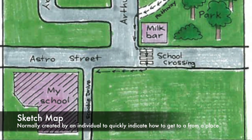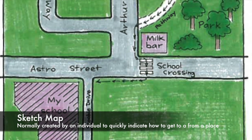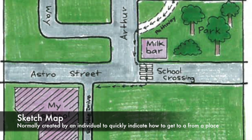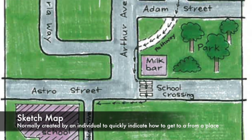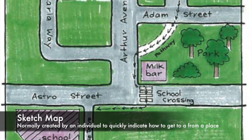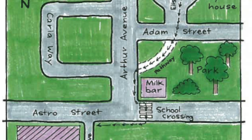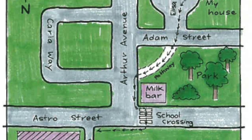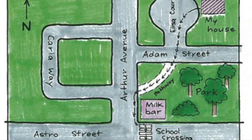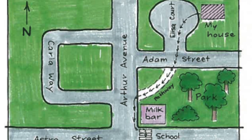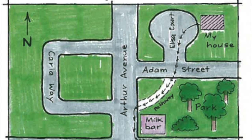There are six types of basic maps that you need to learn about. The first type of map you need to learn about is a sketch map. These maps are normally created by an individual to quickly indicate how to get to and from a place. Typically they are not drawn to scale and do not conform to set standards.